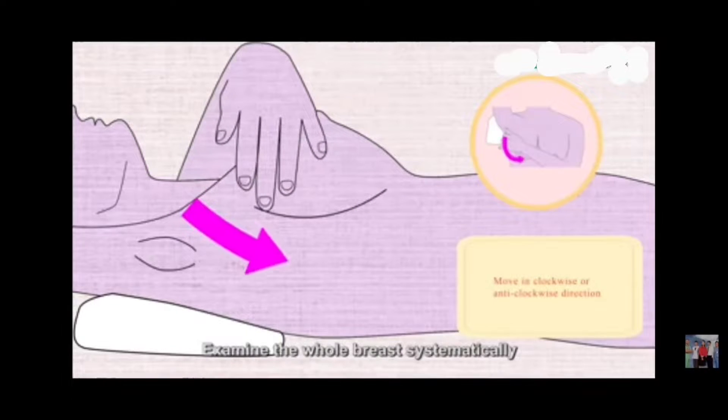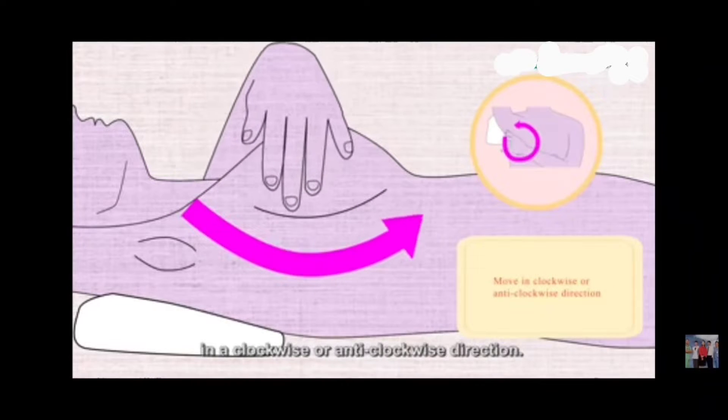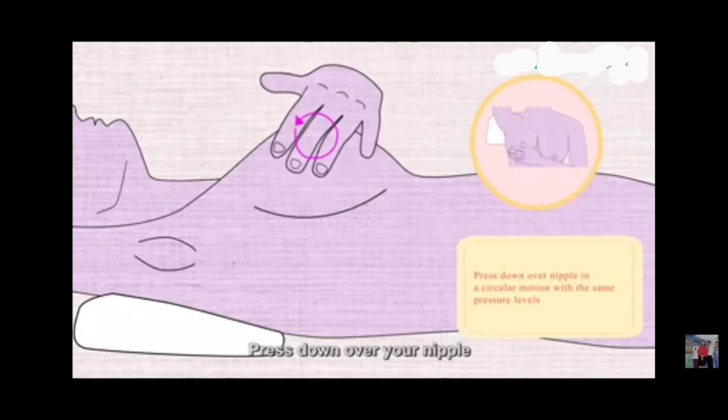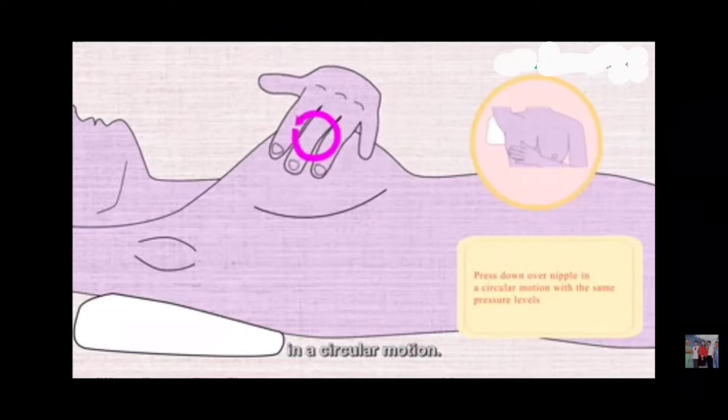Examine the whole breast systematically in a clockwise or anti-clockwise direction. Press down over your nipple with three varying pressure levels in a circular motion.